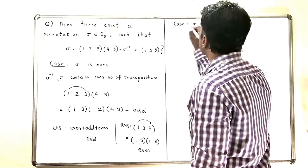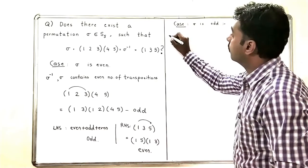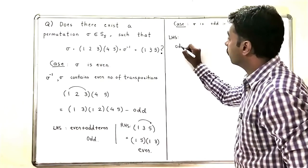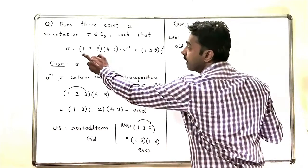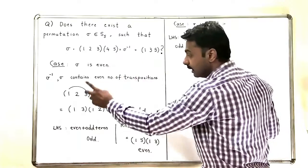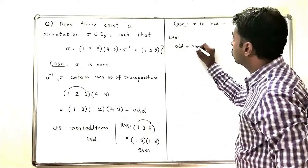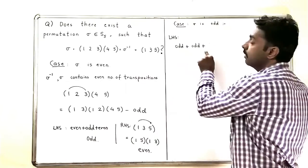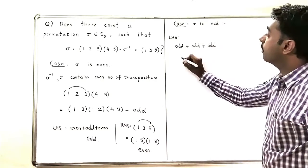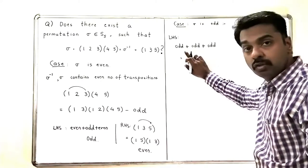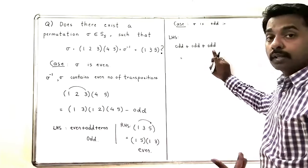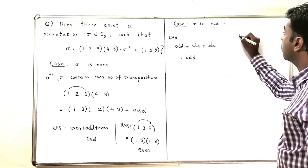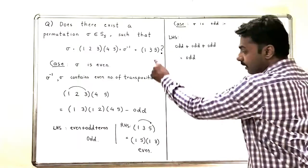So the only option left is that σ is odd. Let us see what happens in that case. On the left-hand side, σ is odd, the middle permutation (1 2 3 4 5) is also odd, and σ⁻¹ is also odd since σ is odd. So the left-hand side is the sum of three odd numbers of transpositions, which is again odd.